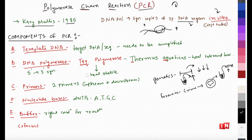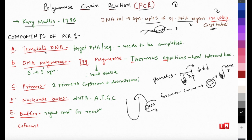In simple terms, PCR means synthesizing multiple copies of a specific DNA region in vitro - in the lab, generally in a test tube. So what do you need? First and foremost, you need a DNA template - the target DNA sequence you want to amplify. You have to have your sample or template DNA, and this is generally going to be a double-stranded DNA.